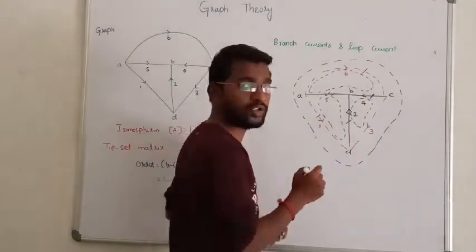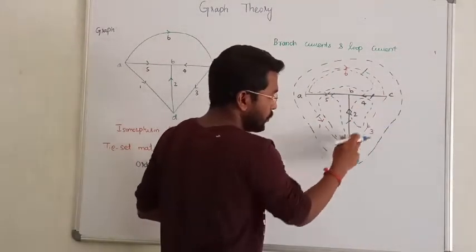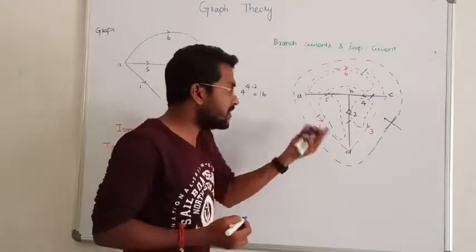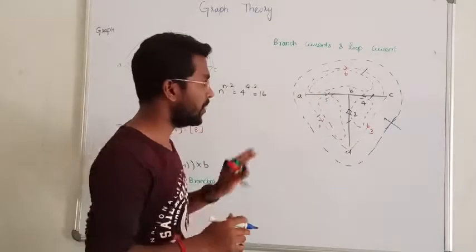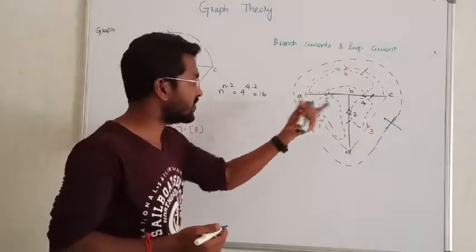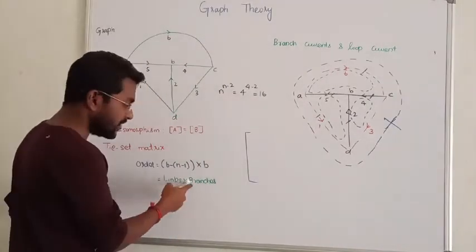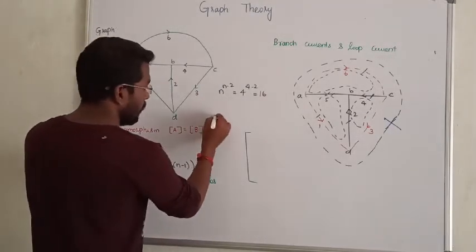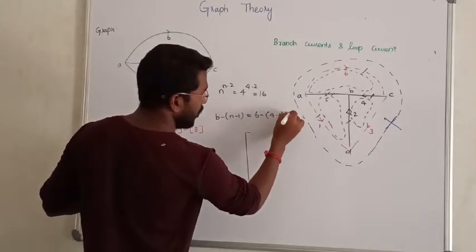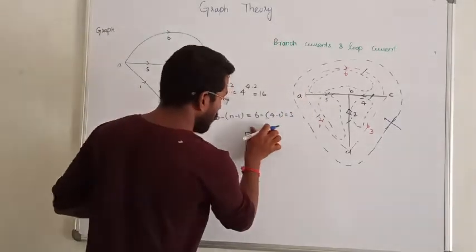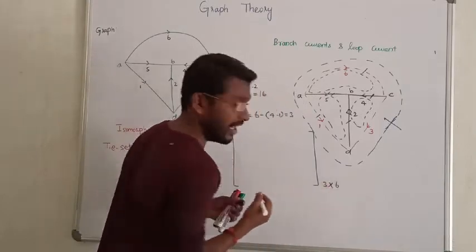There are three links, so we can form three loops. Now I have the tie set matrix. The order of the tie set matrix: number of links is 3, number of branches is 6, so the order is 3 cross 6. That is called the tie set matrix.